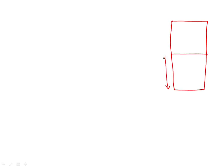So let's assume this is our layered porous media. This is layer one with the thickness of L1, and this is layer two with the thickness of L2. The hydraulic conductivity of layer two is K2 and the hydraulic conductivity of layer one is K1.